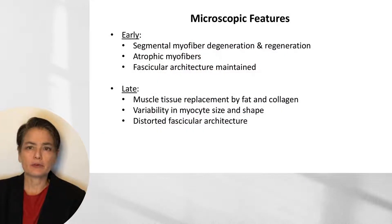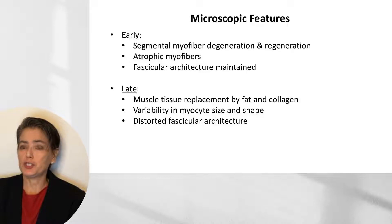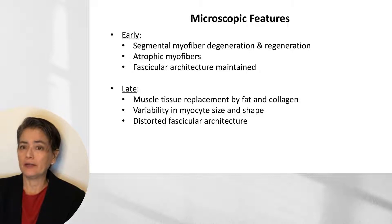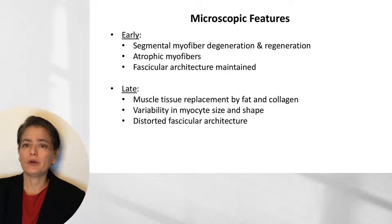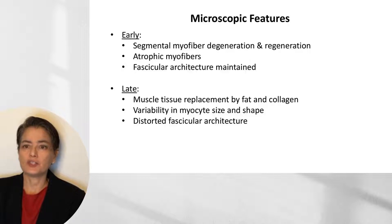Microscopically, findings depend on when we are biopsying the patient. Early on, we see segmental myofiber degeneration and regeneration as well as scattered atrophic myofibers and a small amount of endomysial fibrosis, while fascicular architecture is maintained. Over time, however, we see muscle tissue replacement by fat and collagen, variability in myocyte size and shape, and loss of fascicular architecture.